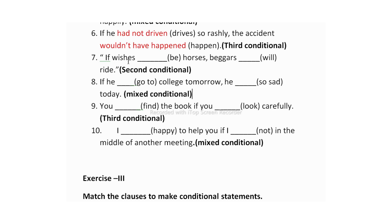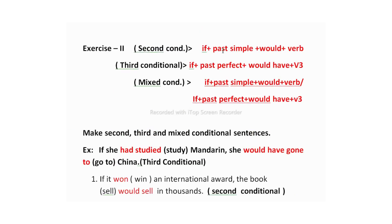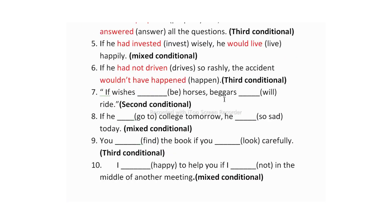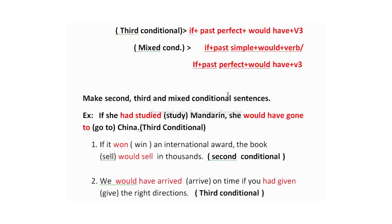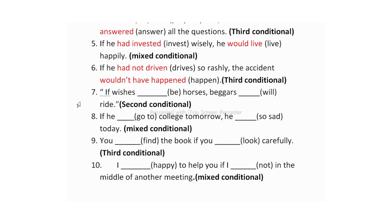The seventh one is: 'If fishes dash horses, beggars dash.' You have to add second conditional. Structure: if + past simple + would + V1. The V2 of 'be' in conditional statements is 'were.' Answer: 'If wishes were horses, beggars would ride on them' — 'were' is past simple and 'ride' is V1 used with the modal 'would.'